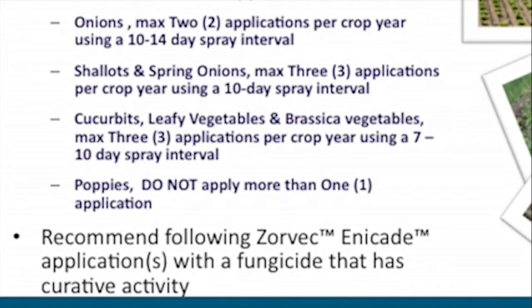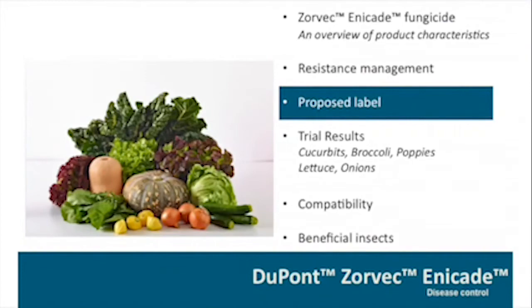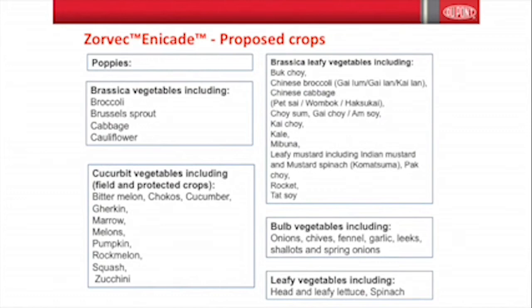Onions have a maximum of two applications per crop year at a 10–14 day interval. Shorter-growing crops — shallots, spring onions, leafy veg, leafy brassicas — have a maximum of three applications, and poppies just one. Rotating through other modes of action and other effective alternatives will help preserve this product. The proposed Australian label covers quite a few crops, including Chinese brassicas, leafy brassicas, leafy veg, and larger crop groups.